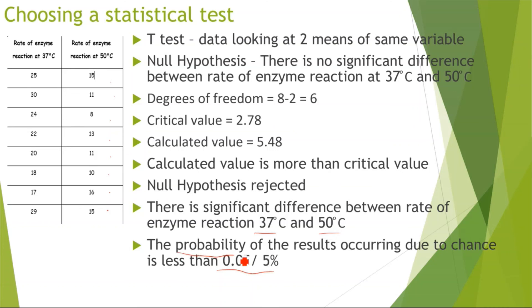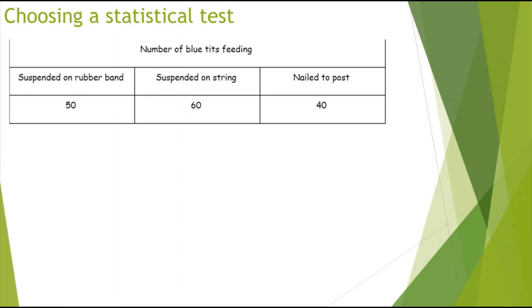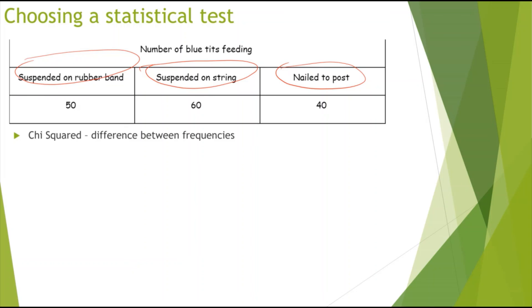Make sure that you're using the words probability and results. Looking at the final example — there are three sets of frequencies: suspended on rubber band, suspended on string, and nailed to pulse. Because there are three sets of frequencies, I would think of doing the chi-squared test to find the difference between frequencies.